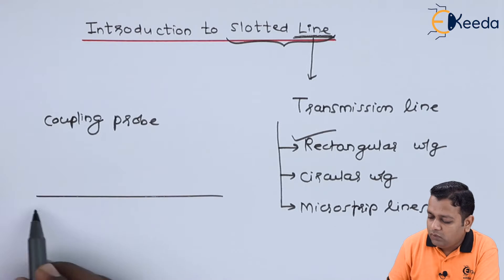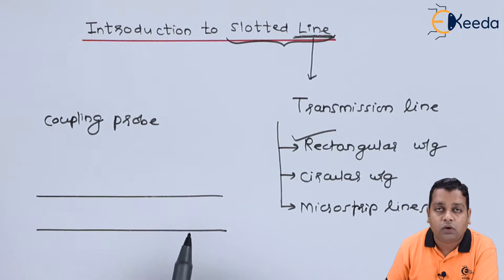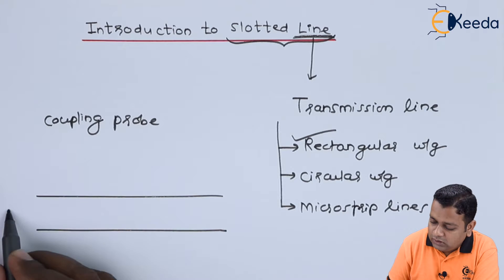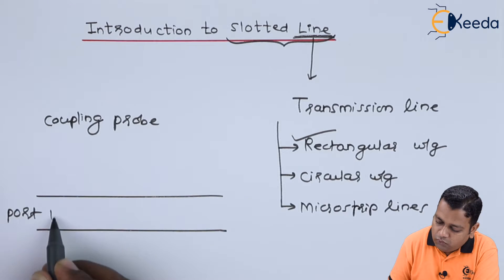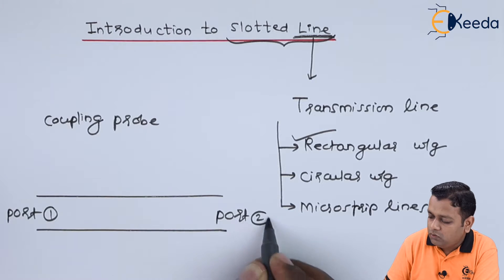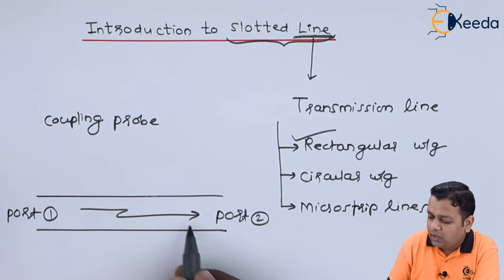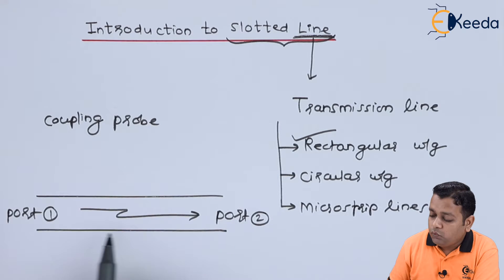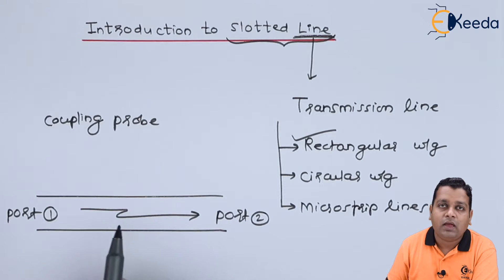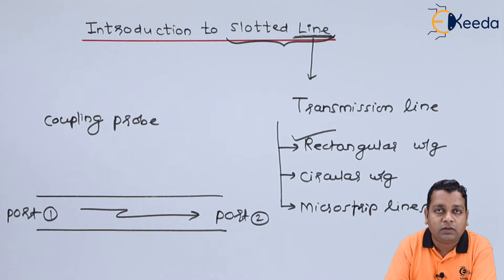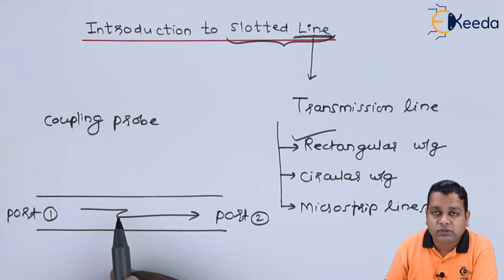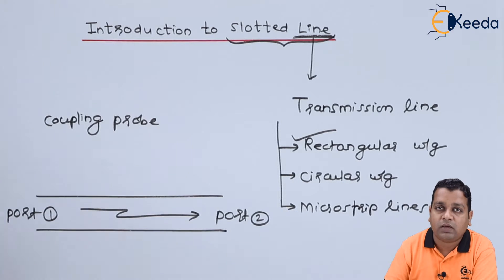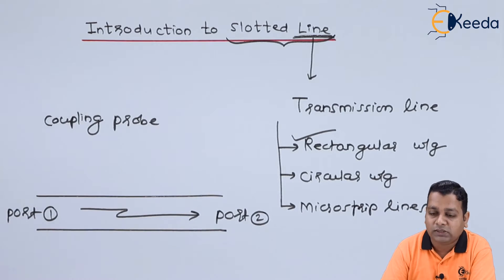The rectangular waveguide is a hollow metallic tube having rectangular cross-section. Let us say this is port 1 and this is port 2, and there will be propagation of microwave signal from port 1 to port 2. While we have propagation inside the device, at some locations there will be different levels of strength corresponding to the E and H vectors. Sometimes you can come across the V-max, sometimes you can come across the minimas.